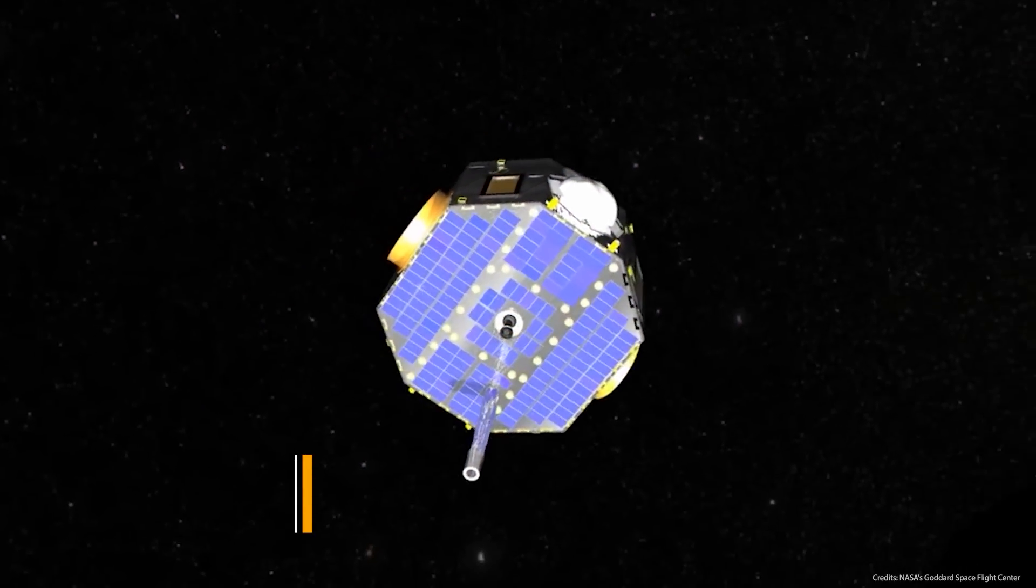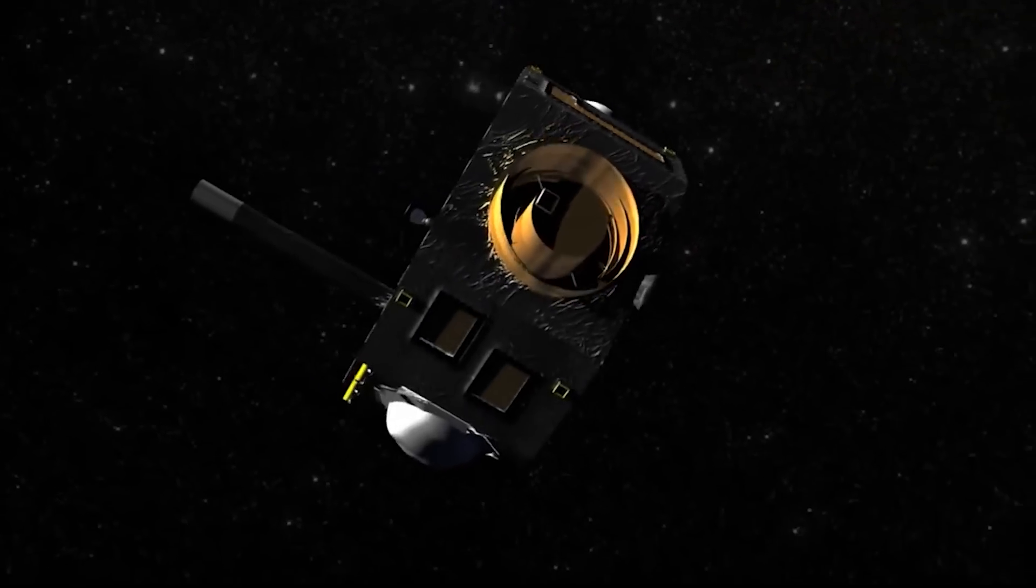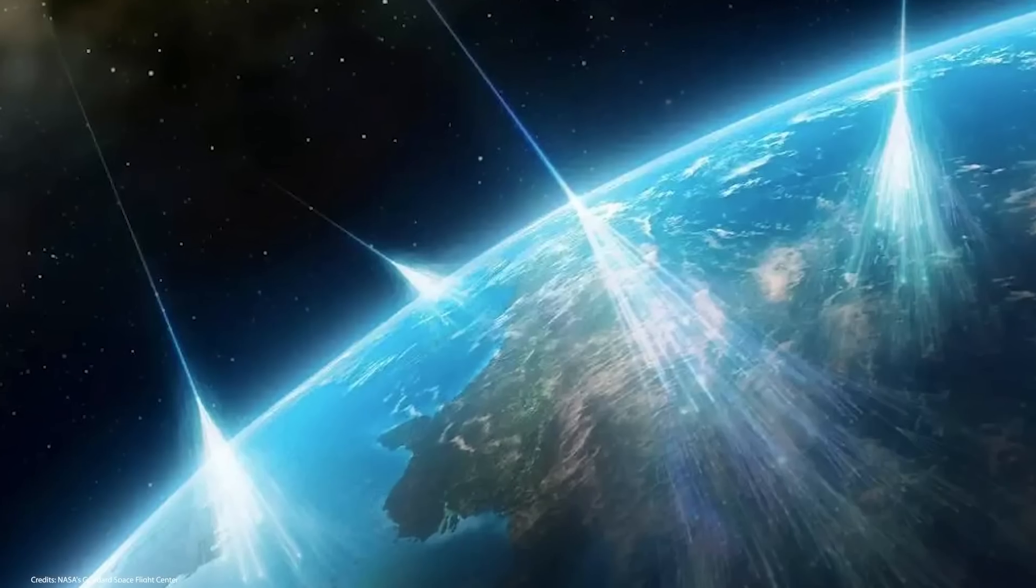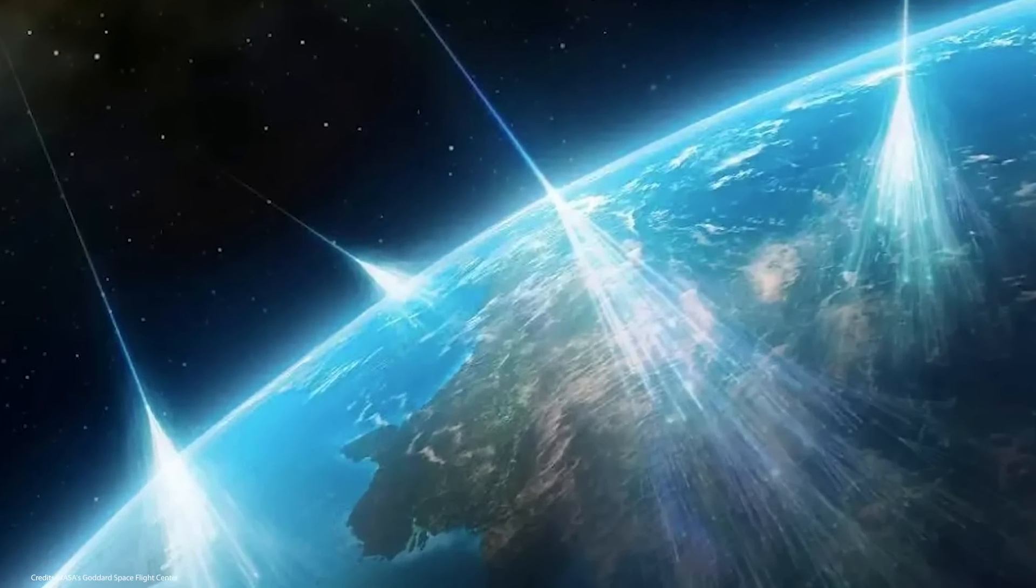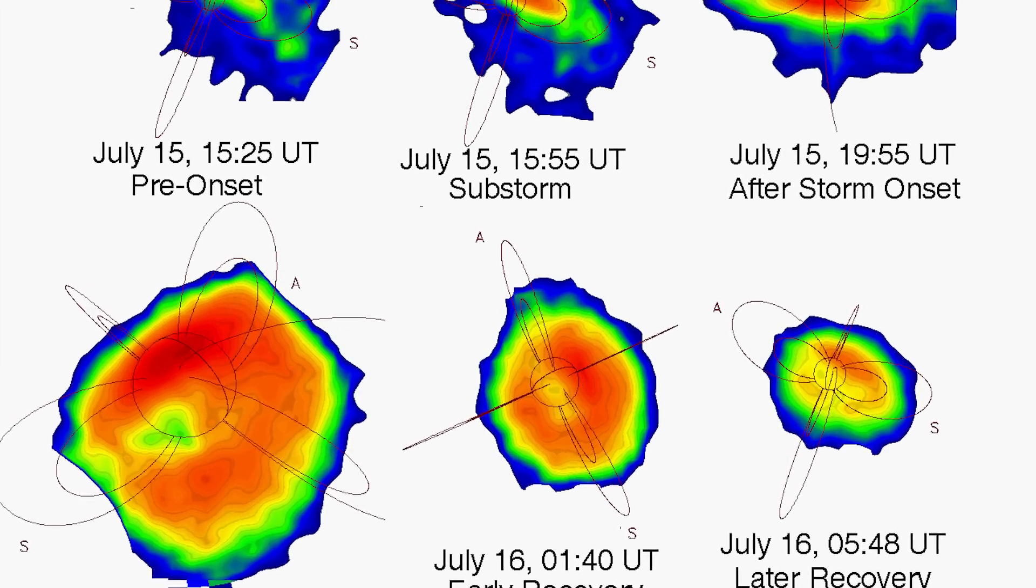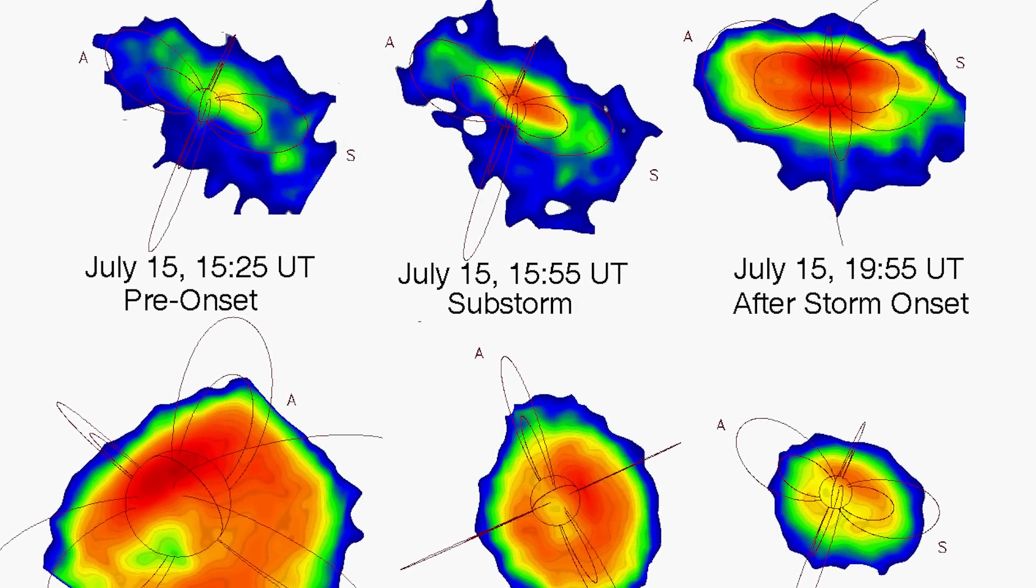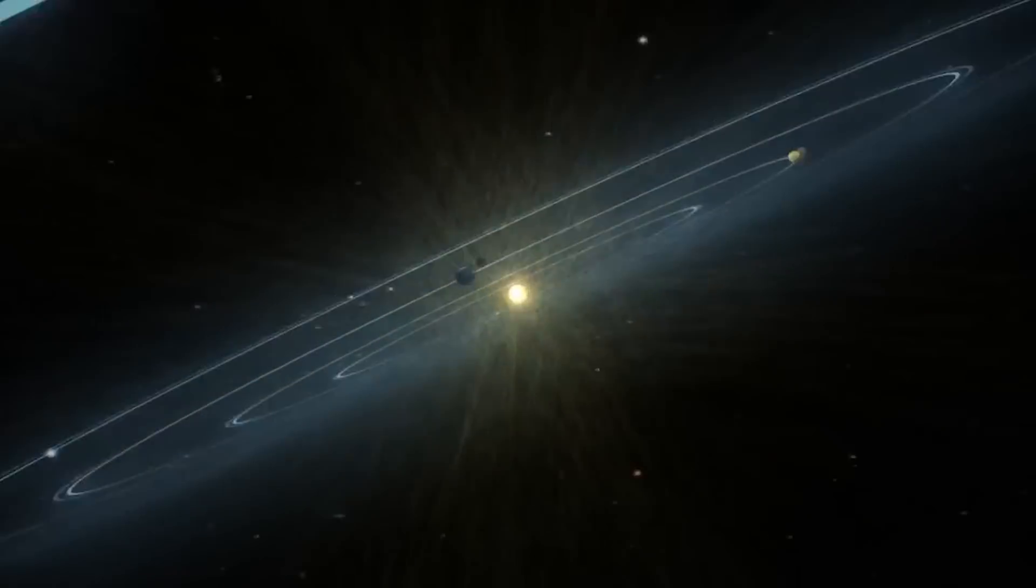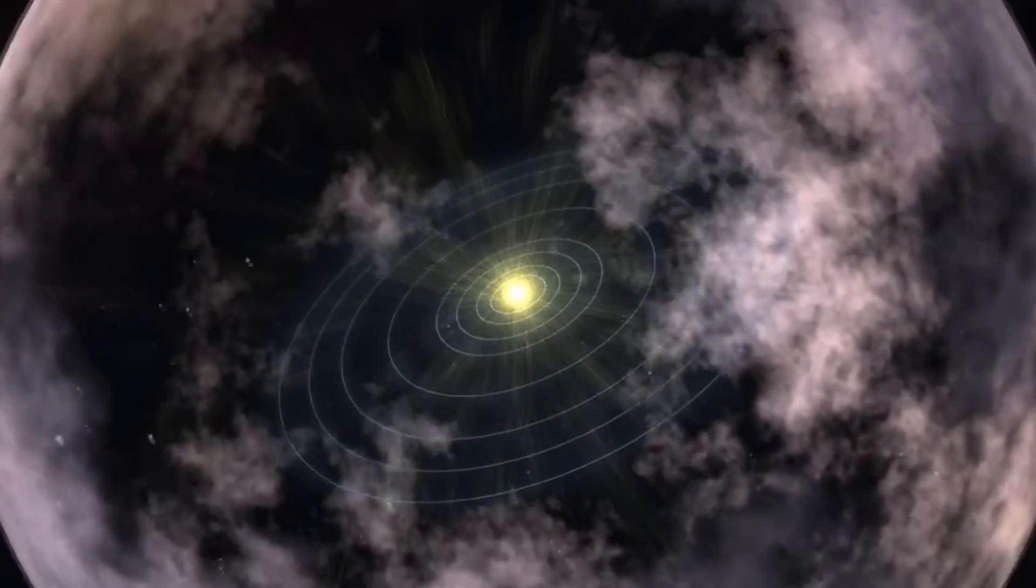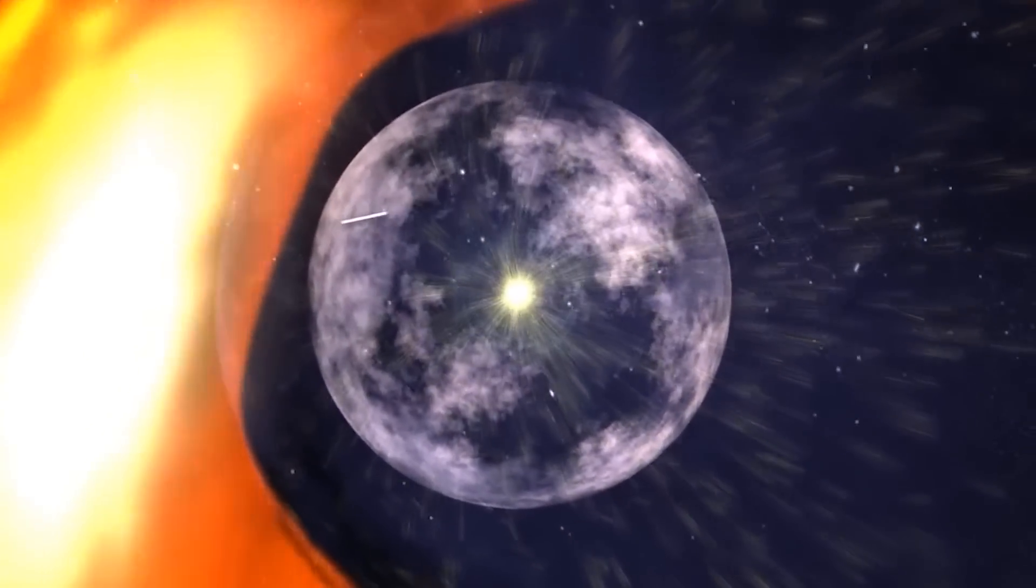IBEX Data: Another mission known as IBEX, the interstellar boundary explorer, studied cosmic rays speeding towards the Earth from the distant reaches of the galaxy, as well as another type of particle, the energetic neutral atom, which originates in the solar system. The mission aimed to map the boundary between the solar system and interstellar space, and to understand more about the behavior and composition of the matter that makes up the interstellar medium.